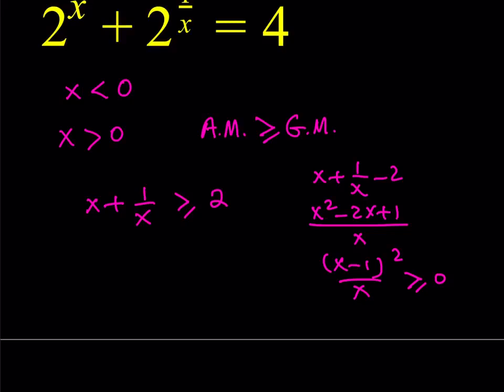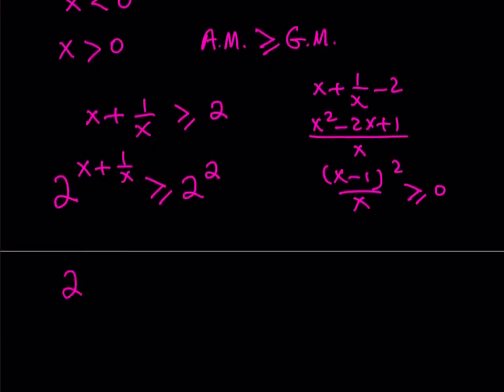I'm going to be getting something like 2 to the power of x plus 1 over x is greater than or equal to 2 to the power of 2, which is equal to 4. So this basically tells me that 2 to the power of x plus 1 over x is going to be greater than or equal to 4, all the time, if x is positive.